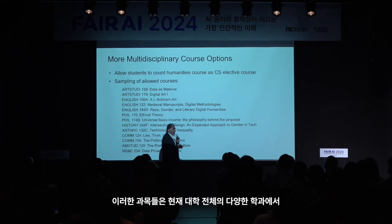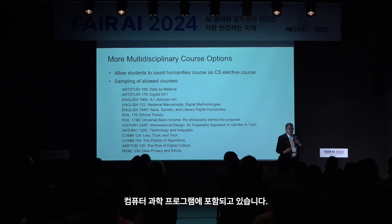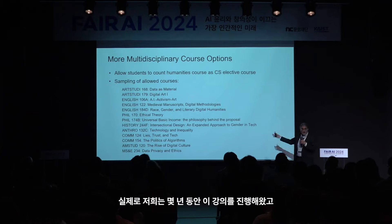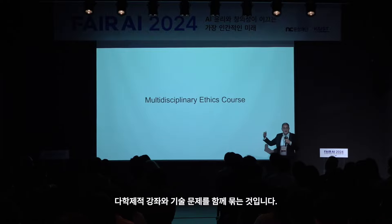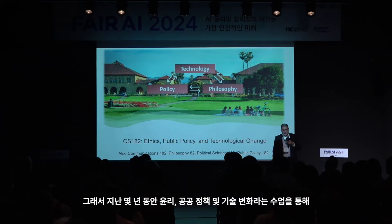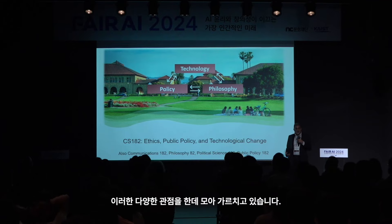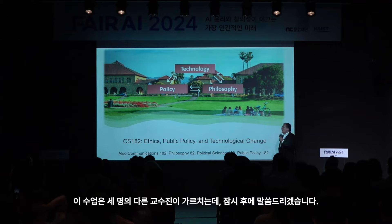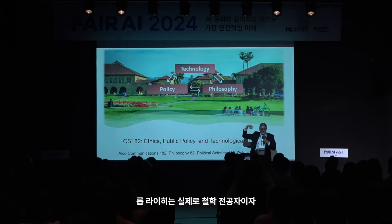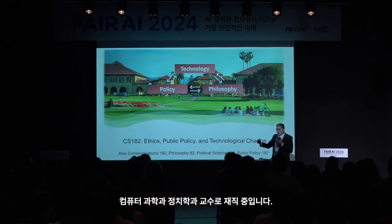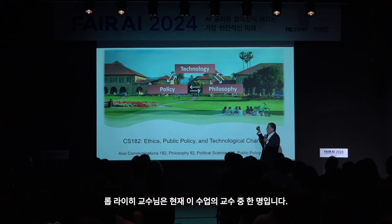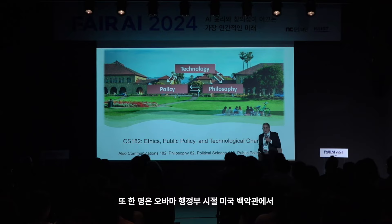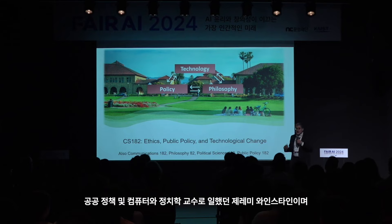These courses come from departments as diverse as anthropology, history, philosophy, English, and American studies—a wide swath from across the university. This has been going on for several years and is quite popular among students. The second approach is multidisciplinary courses focused on ethics with technical issues together, like our class called Ethics, Public Policy and Technological Change. It's taught by three faculty, one of whom is a philosopher with an appointment in political science—Rob Reich, who recently briefed President Biden.